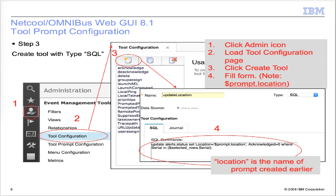Now we need to create the WebGUI tool that will use the prompt tool we just created. Click the admin icon and load the Tool Configuration page. Click Create Tool and fill the form, noting the type. To associate the WebGUI tool to the prompt tool, we use dollar sign prompt dot and then the name of the prompt tool.